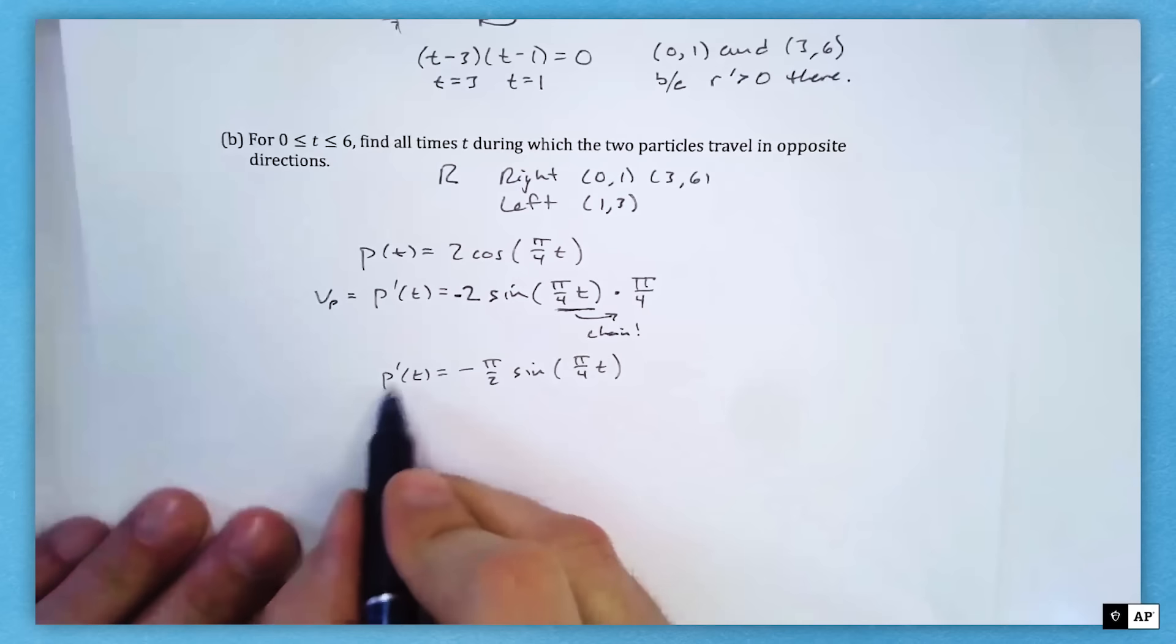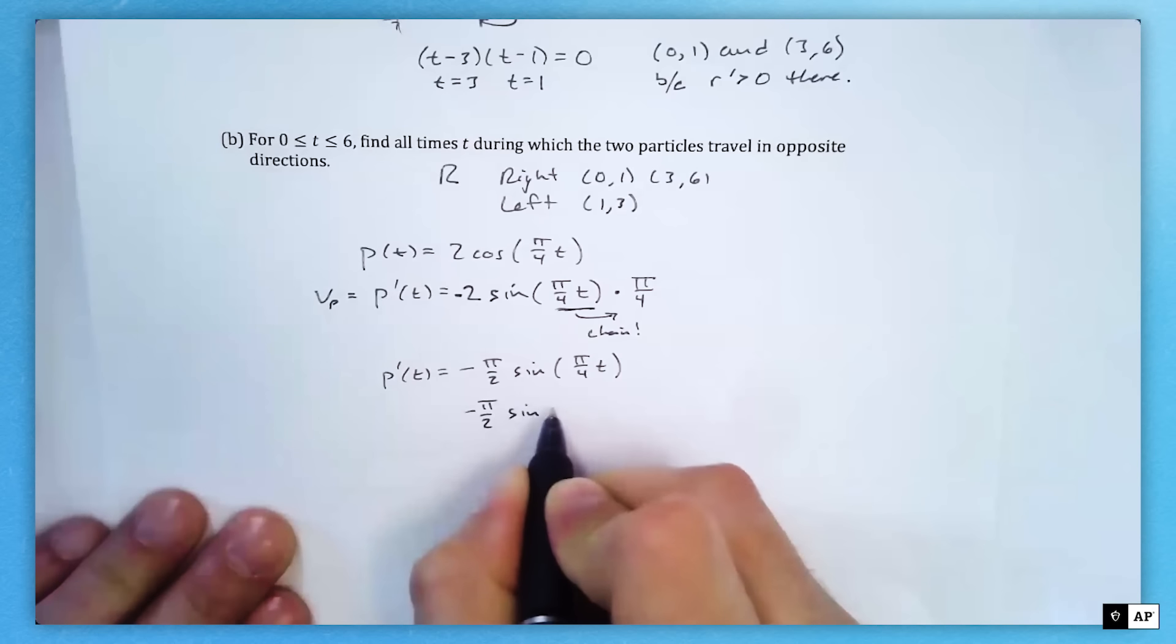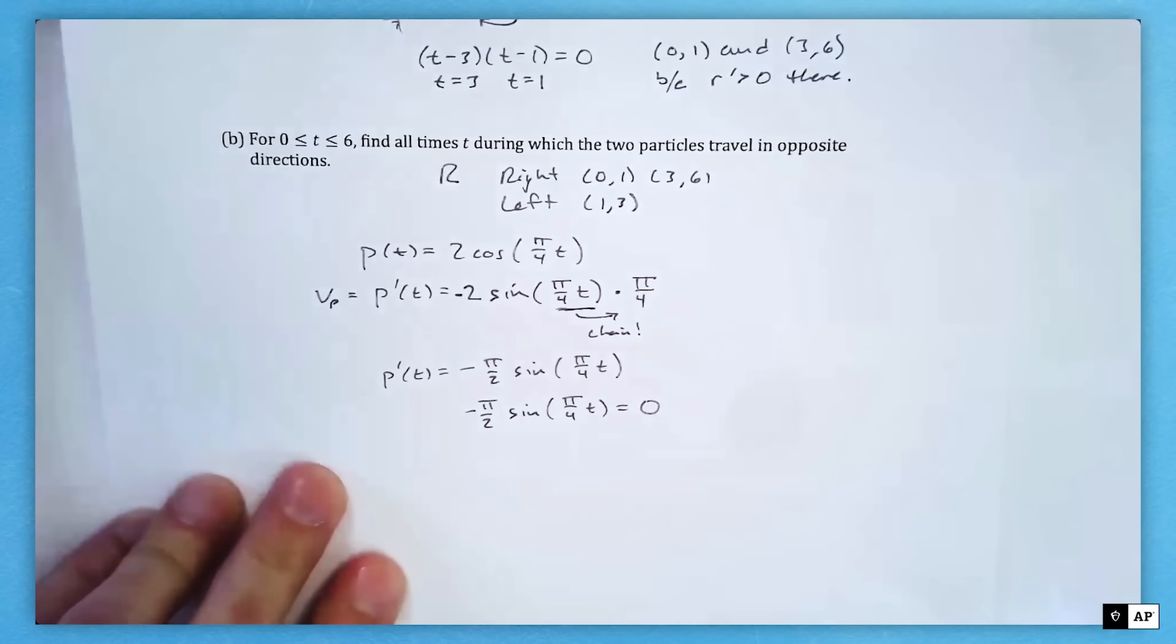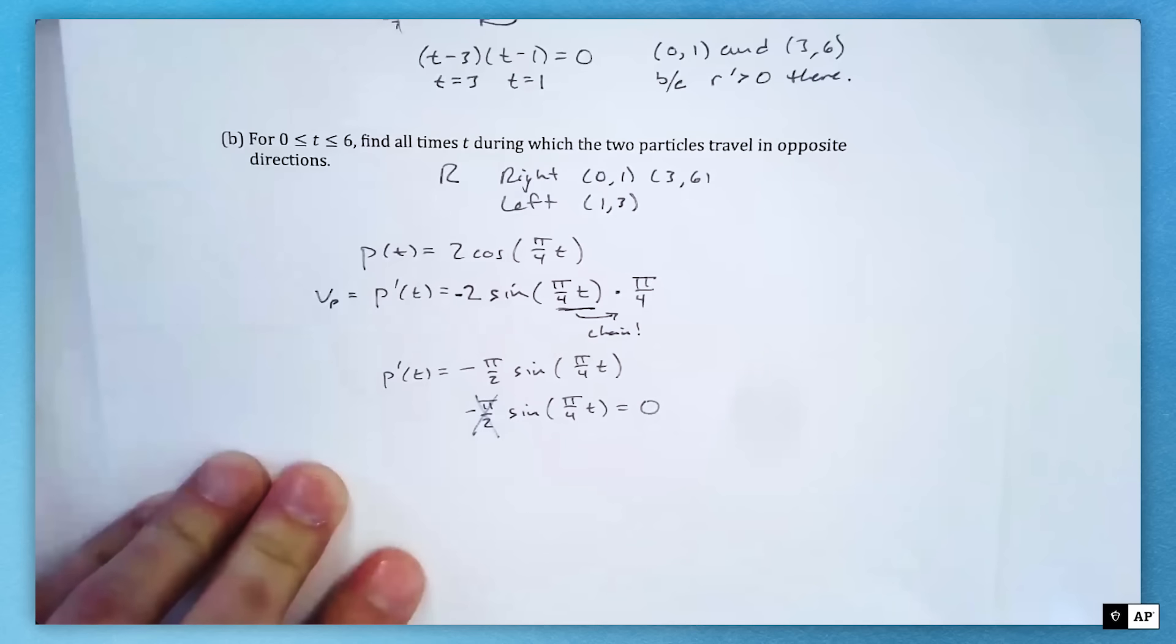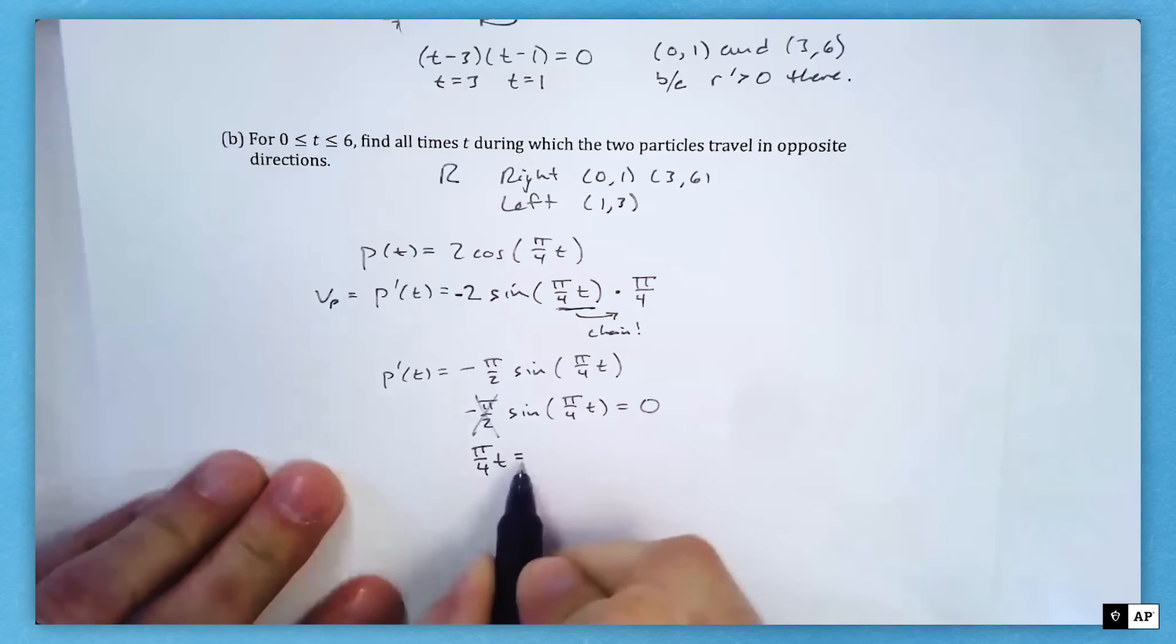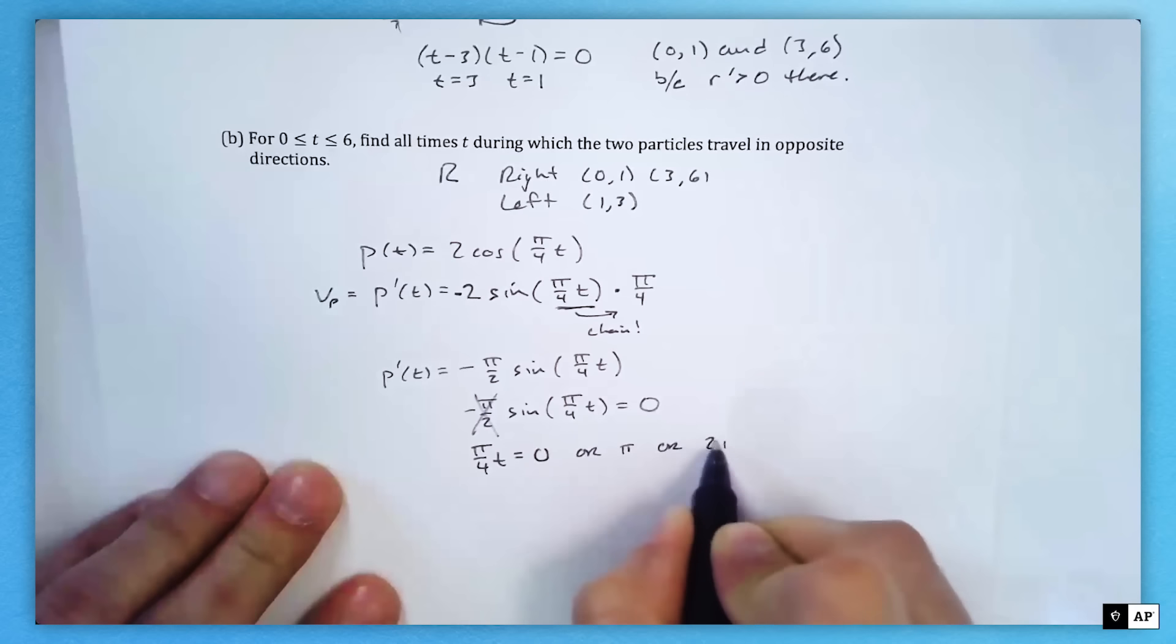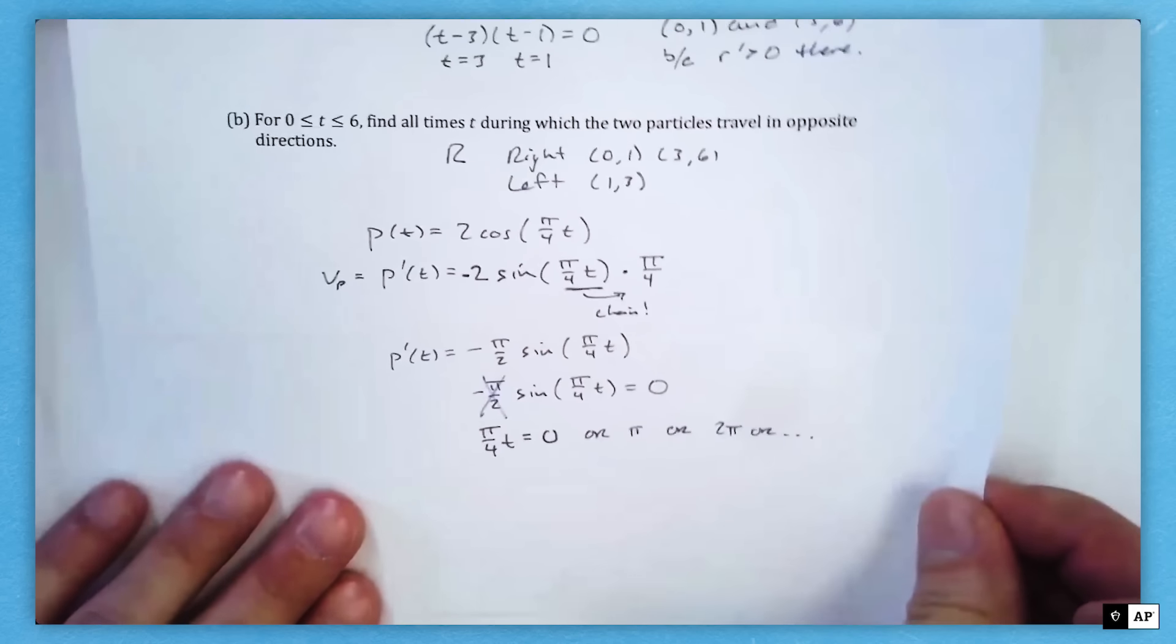Cleaning that up, I get negative π/2 sine of π/4 t. That's my P'(t). Again, I want to define left right. I kind of have to find where it stops, so I'm going to set that equal to zero. I don't want to say this whole expression always equals zero, so I do another line. I'm really looking for where sine of π/4 t is zero.